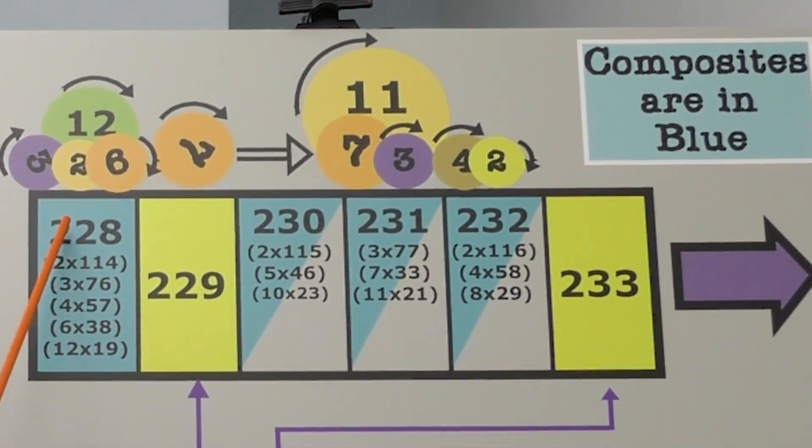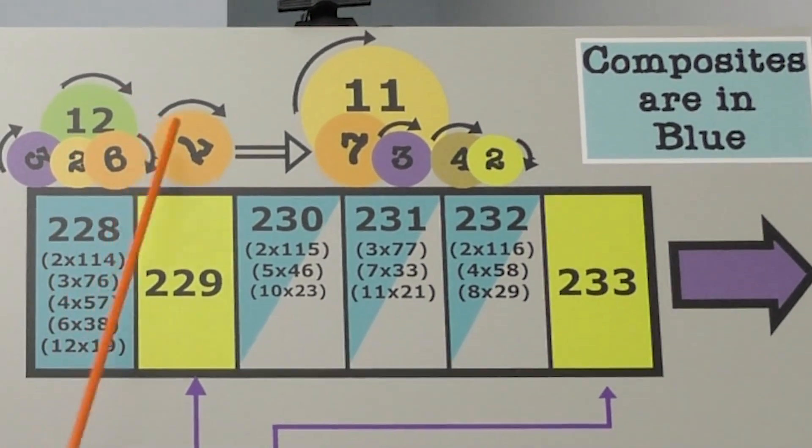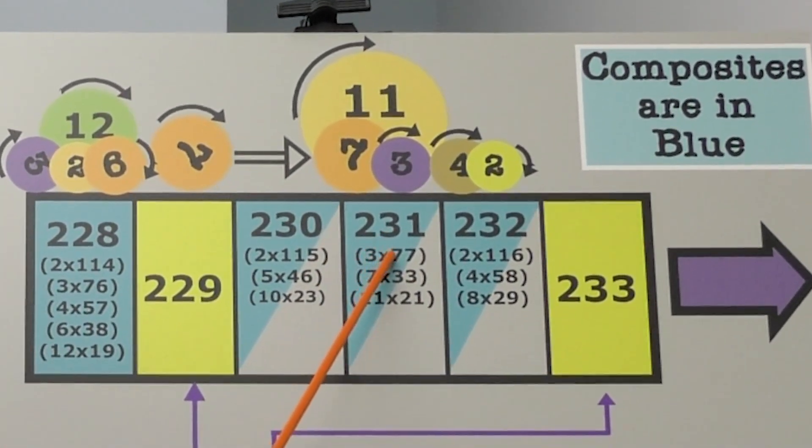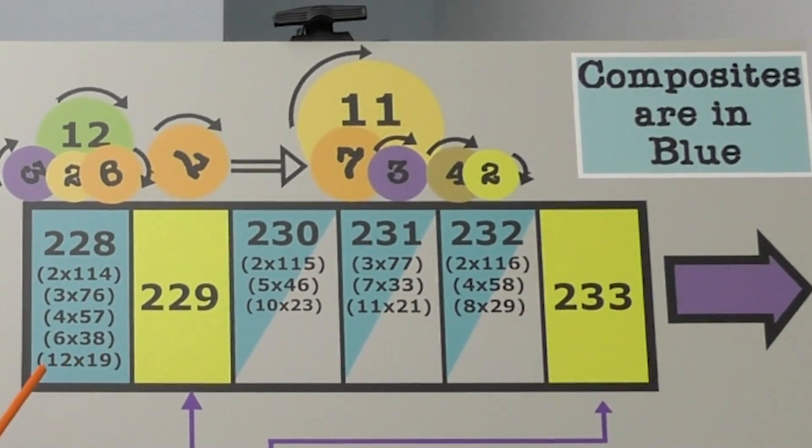3 is spinning. Where does it wind up? At 228. And it keeps spinning, then it winds up at 231. It keeps spinning and it's off the board here.